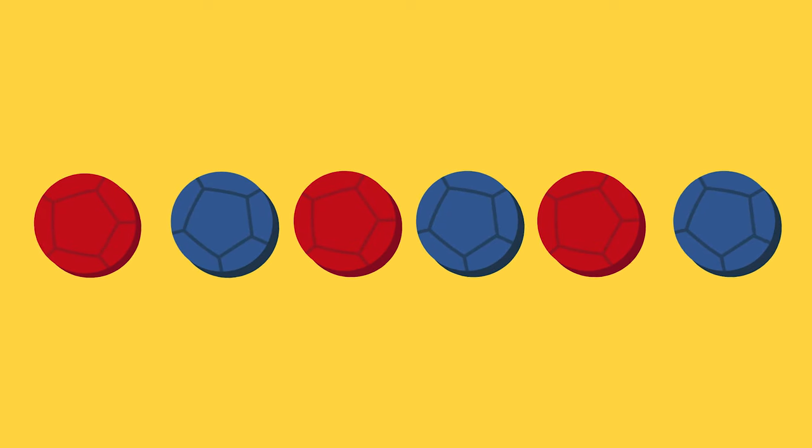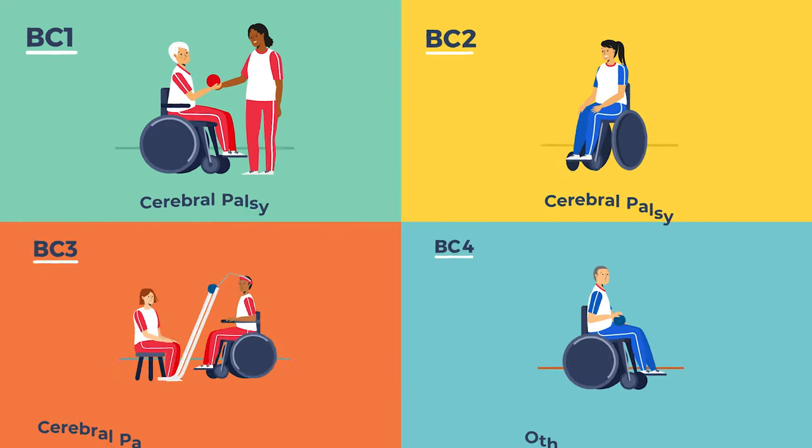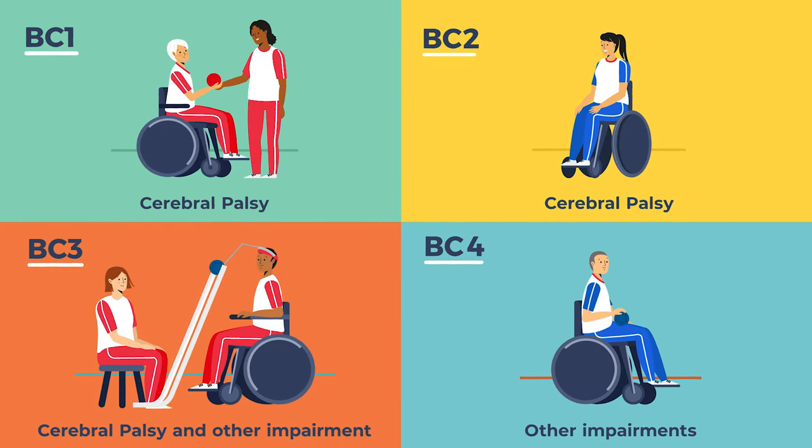Individual and pairs play four ends. Team matches have six ends. At Paralympic level, players are divided into four classifications dependent on their impairment and functional ability.